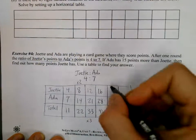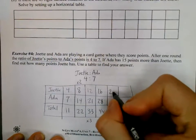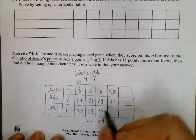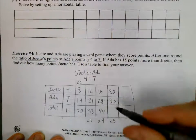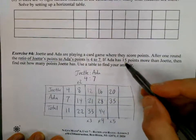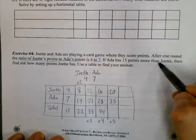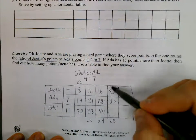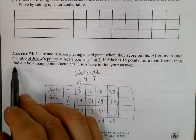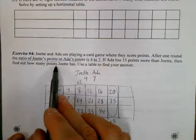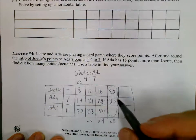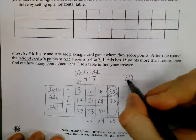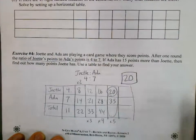We're doing times five now. Four times five is twenty, seven times five is thirty-five. Hey, I think we found it! If Ada has 15 points more than Joette, this is that right there — thirty-five minus twenty equals fifteen. They're asking us how many points Joette has, and it is twenty.